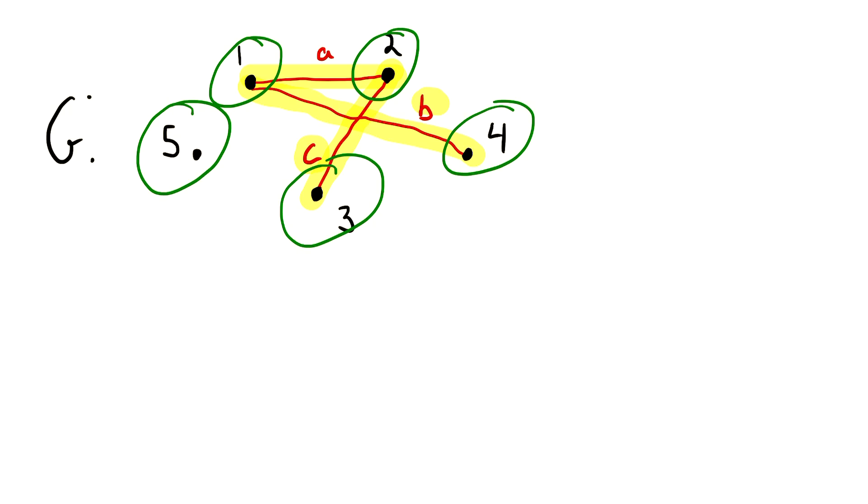Also, five over here is not adjacent to any vertex. Thus, we can say that five is an isolated vertex because it is not adjacent to any other vertices.